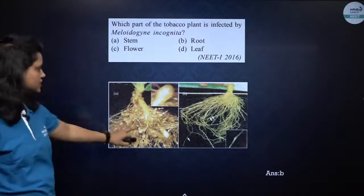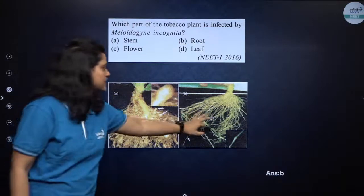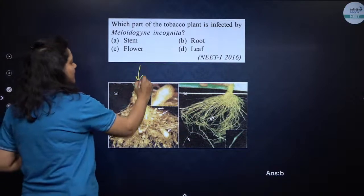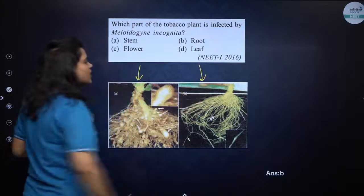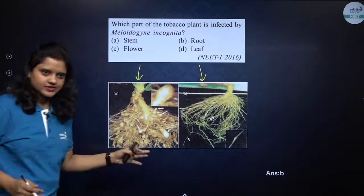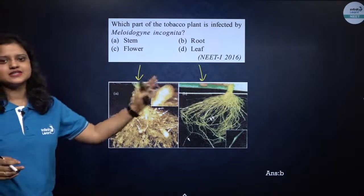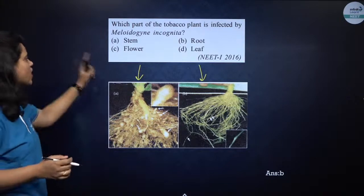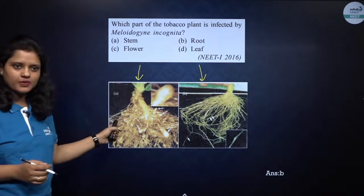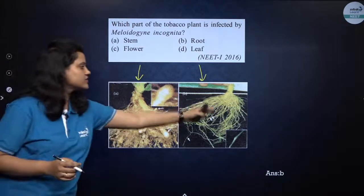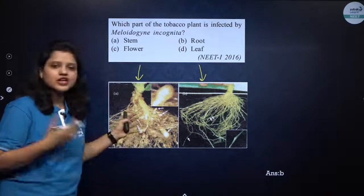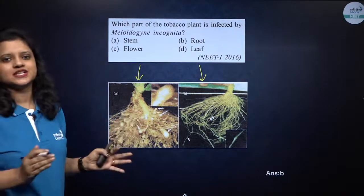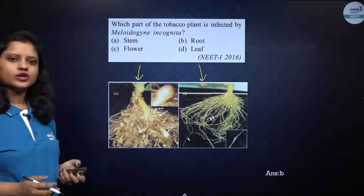Here you can see the image of the infected root of the tobacco plant, and this is the image after the RNA interference technique was applied. When we used this technique on the tobacco plant, we get roots that are free from the infection of Meloidogyne incognita.